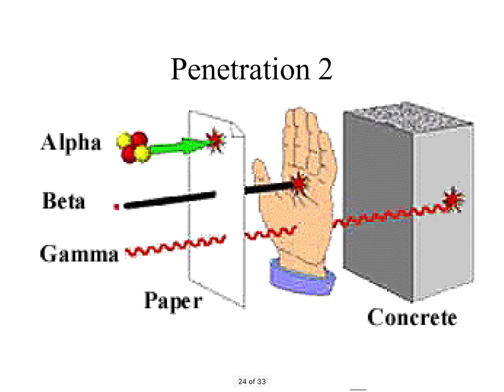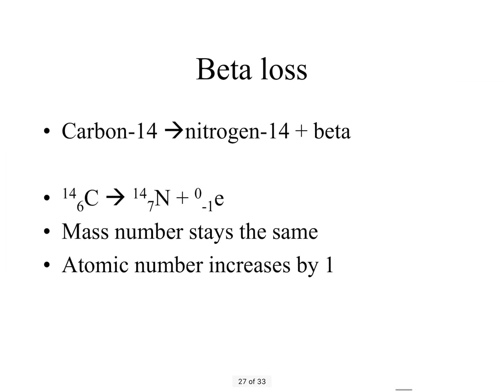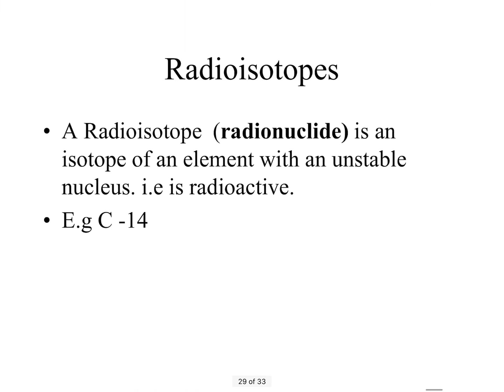For nuclear reactions: when an element emits alpha, its mass number decreases by four and its atomic number decreases by two. For beta emission, the mass number stays the same — you lose a neutron but gain a proton so they cancel out — but the atomic number increases by one because you're gaining a proton.